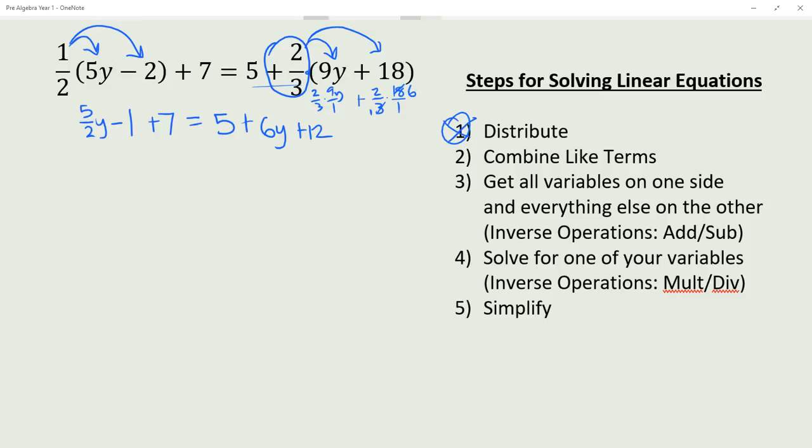Now we're done with that step, so we combine like terms. On this side we have minus 1 plus 7, so we have 5/2 y plus 6. On the right side we have 5 and plus 12, so we keep 6y the same and 5 plus 12 is 17. Keep in mind the sign in front of the number determines whether we're adding or subtracting. This minus 1 is a negative 1—the negative does not apply to the 5/2 y.